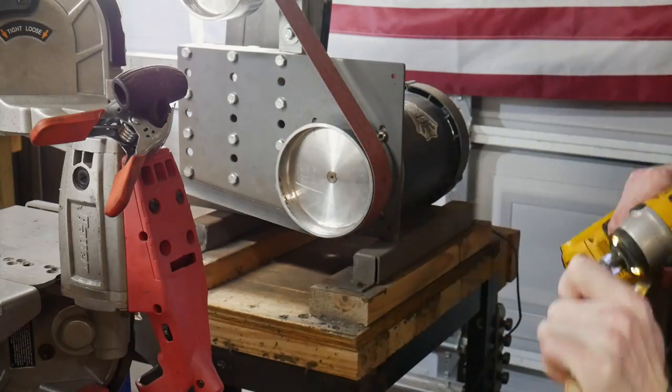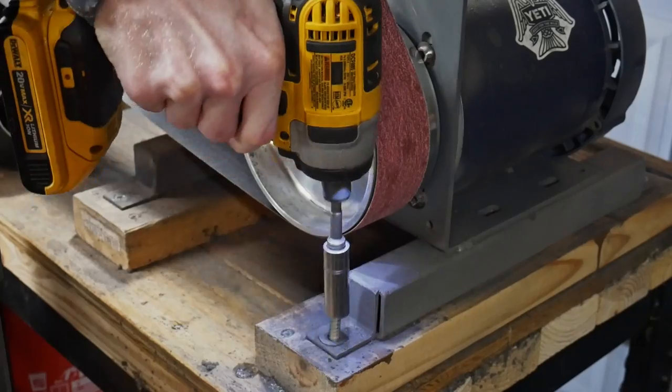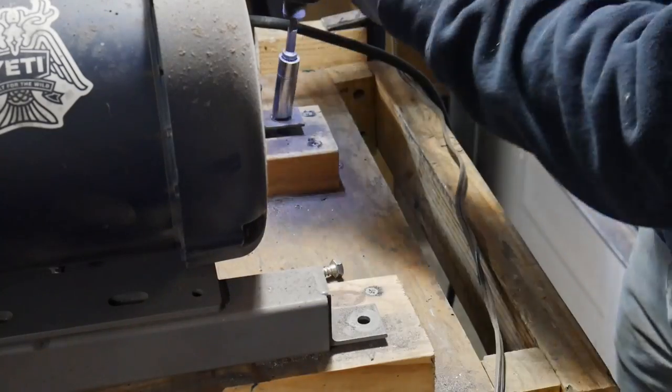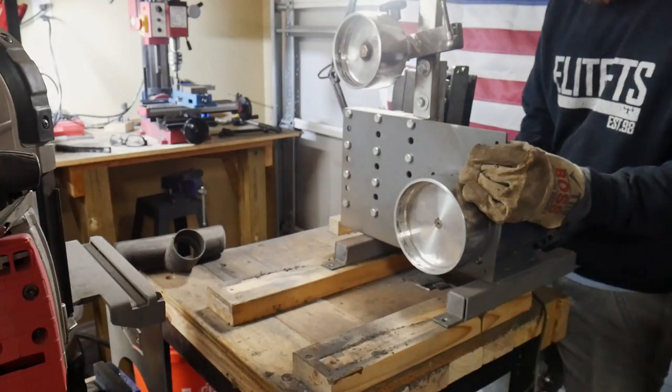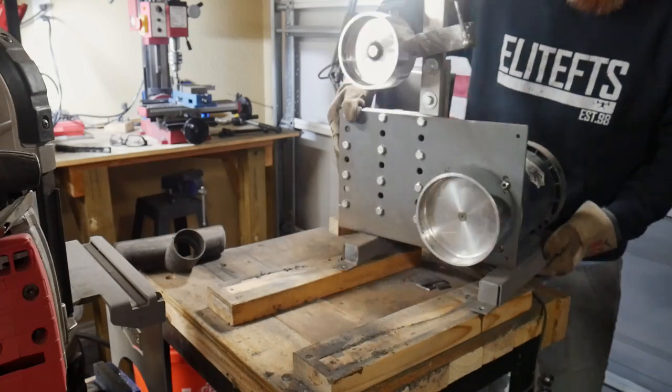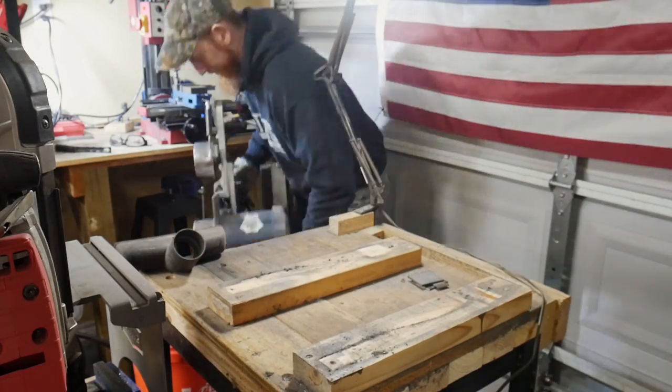Alright guys, welcome back to the shop. In today's video we're going to go over how you can turn any 2x72 grinder into a grinder that can flip back and forth between the vertical and horizontal position.